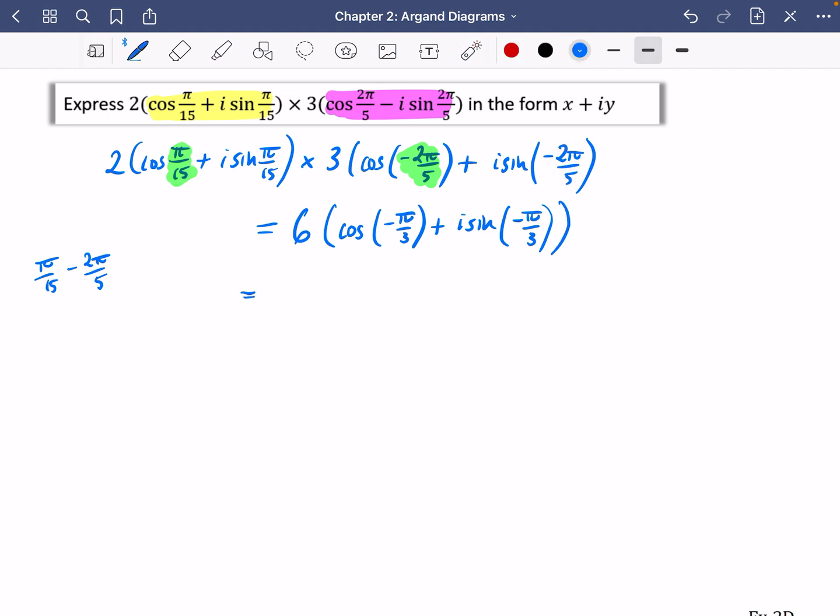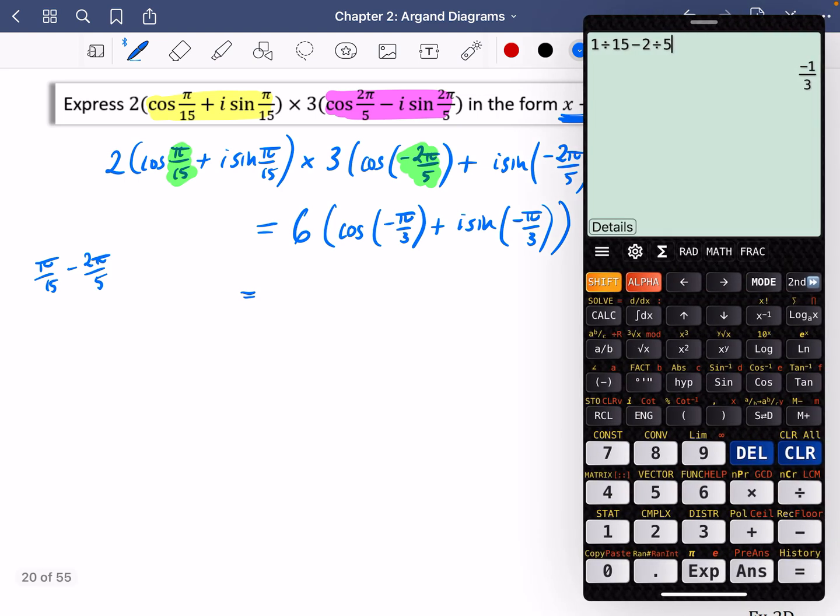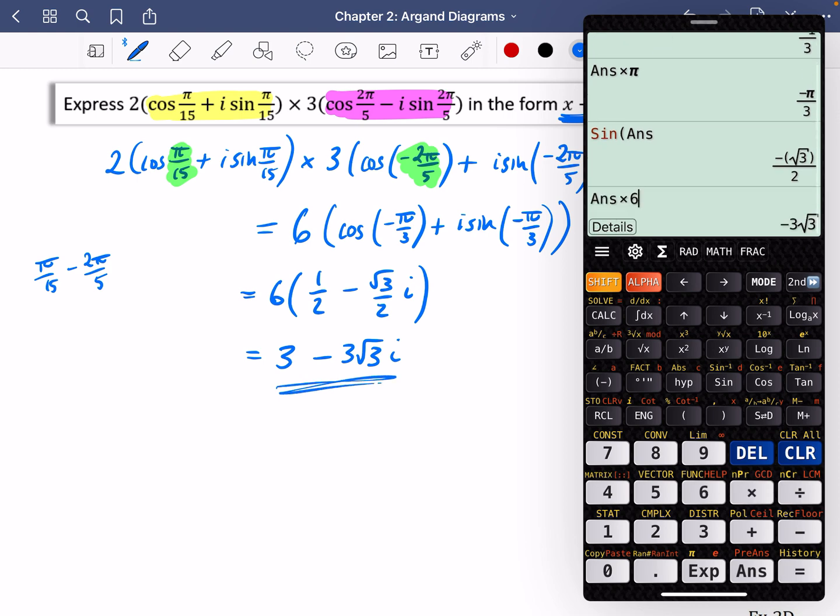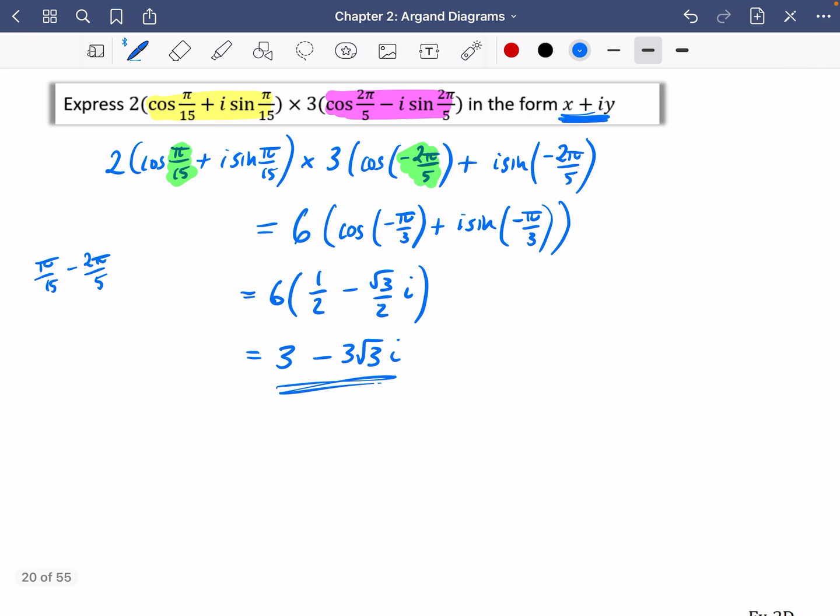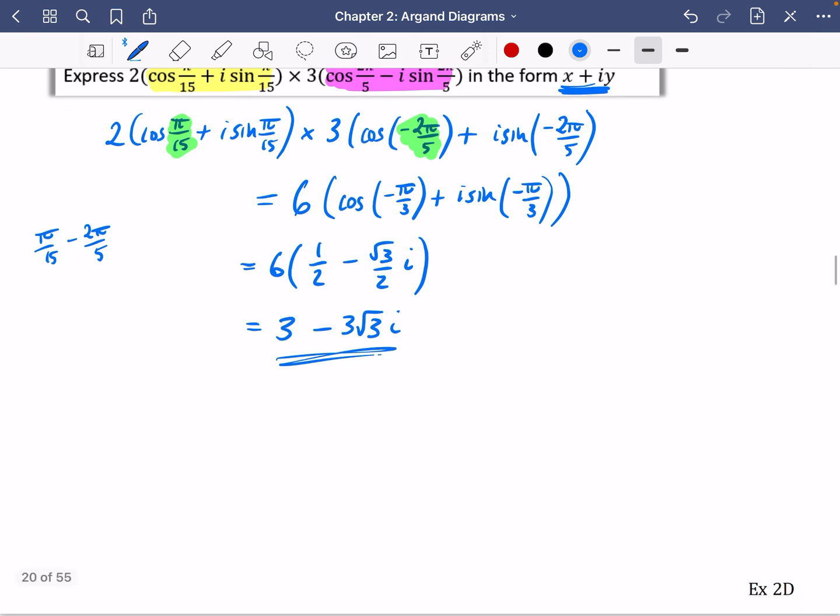So all I need to do now, because they want it in this form, is I need to work out what cos of minus pi over 3 is and what sine of minus pi over 3 is. Now I could do that in my head, but I'm being incredibly lazy today. So the first one is a half. So we're going to have 6 multiplied by a half. And then sine of that is minus root 3 over 2. So it's minus root 3 over 2i. 6 times a half is 3. And 6 times minus root 3 over 2 is 3 root 3. So it's 3 minus 3 root 3i.